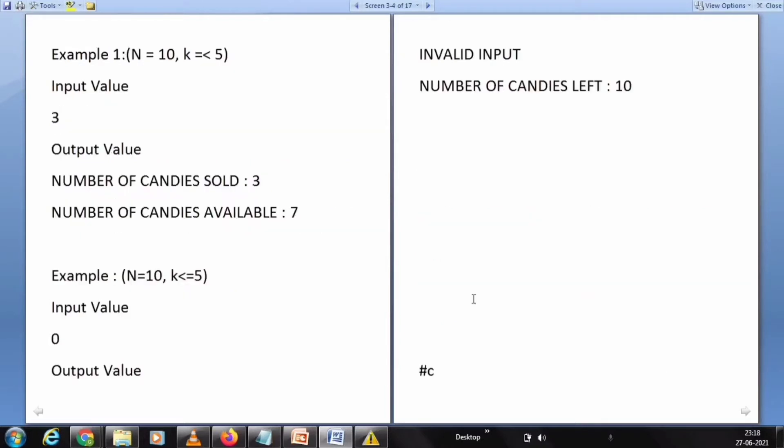Let's see two examples for this. Example one: suppose the input value is 3, the output value must be the number of candies sold equals 3, and the number of candies available equals 7. For example two, N equals 10, K is less than or equal to 5. If the input value is 0, the output must be invalid input, and candies left in the jar must be 10.